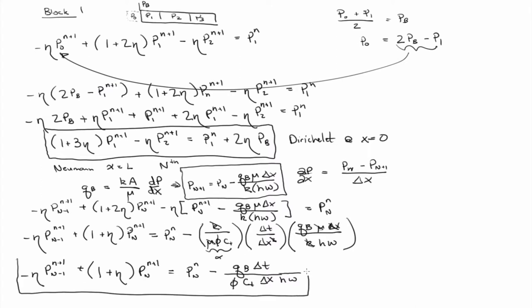So this would be the equation for the nth grid block if you had a constant flux boundary condition. And you can see that for no flow, that would mean that qb equals zero. And so if qb equals zero, this term goes away, and you're left with that, which is what was derived in the notes for no flow.